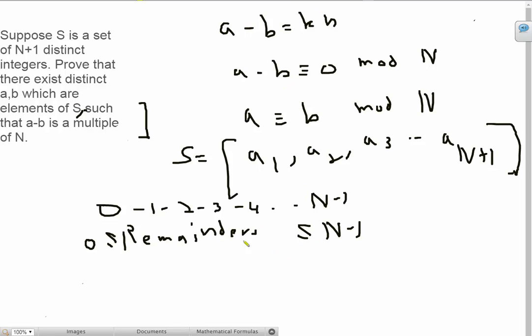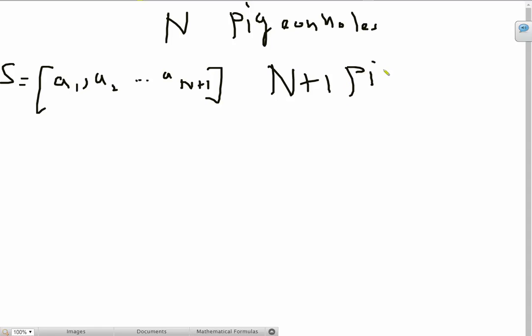All right. So, now we have the pigeonholes from zero to n minus one. And these are basically n pigeonholes. And we had that S for the set of n plus one integers, right? So, we have a1, a2, and so on until a n plus one.